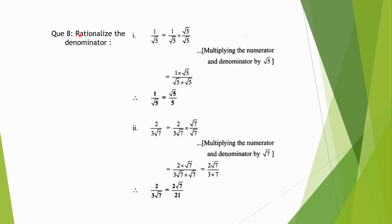Question number 8: Rationalize the denominator. First question: 1 by √5. We will multiply the numerator and denominator by √5. So 1 by √5 multiplied to √5 upon √5. When we multiply we get numerator as √5 and denominator as √5 multiplied to √5, that is 5. So 1 by √5 is equal to √5 upon 5. Second question: 2 upon 3√7. We will multiply with √7 in the numerator and denominator. We have 2√7 in the numerator and 3√7 multiplied to √7, that is 21, in the denominator. So 2 upon 3√7 can be written as 2√7 upon 21.